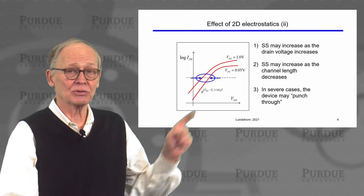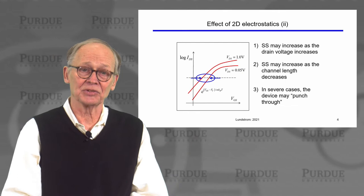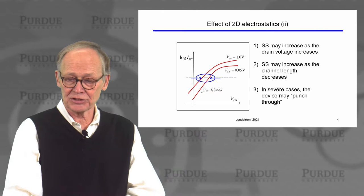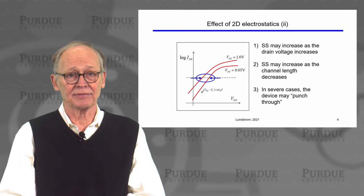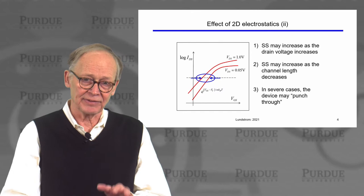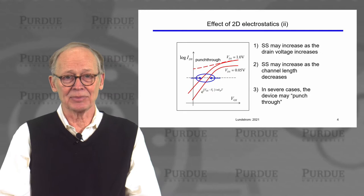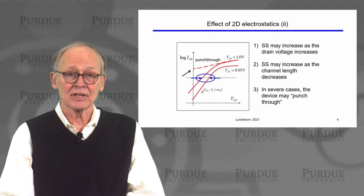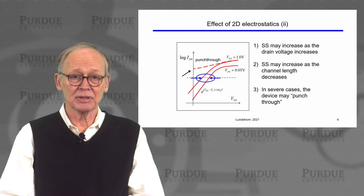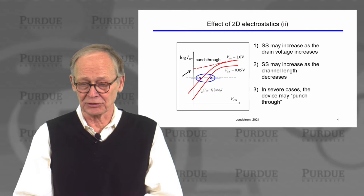We might find that the sub-threshold swing changes — that the off-to-on transition becomes less steep. That's undesirable. That can happen as we increase the drain voltage, and also as we decrease the channel length at a fixed drain voltage. That's a more severe effect of two-dimensional electrostatics. An even more severe effect is punch-through: current flows above threshold even before we apply gate voltage, so the transistor is not useful at that point.